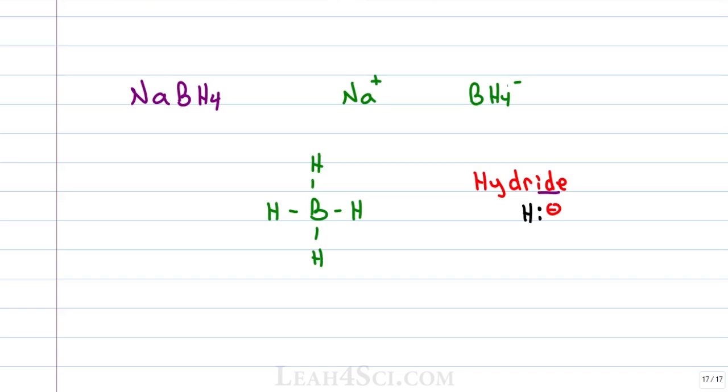When you see the ending -ide, think negative. Chlorine as a negative is chloride, fluorine is fluoride and hydrogen is hydride. It's a tiny atom with a negative charge making it a very strong base.